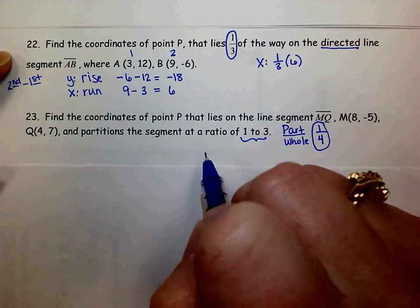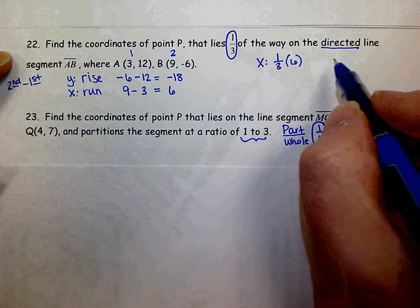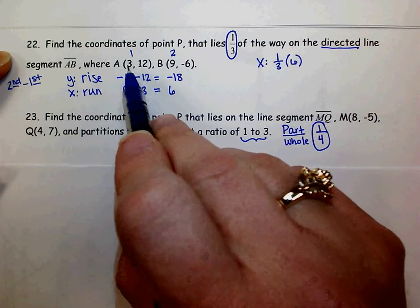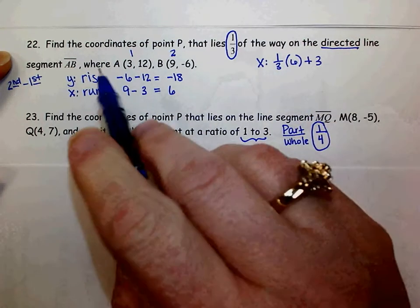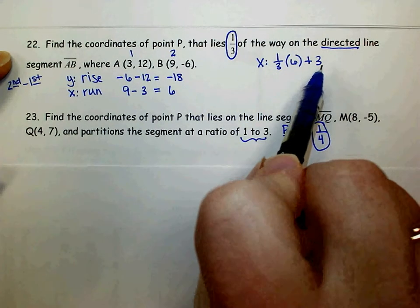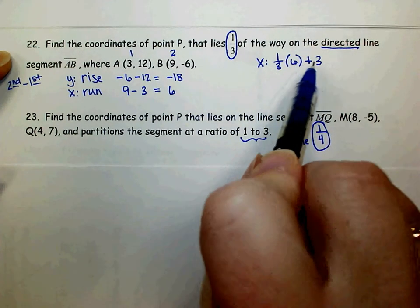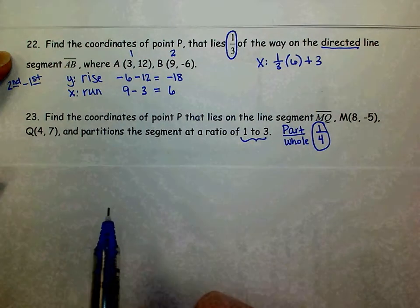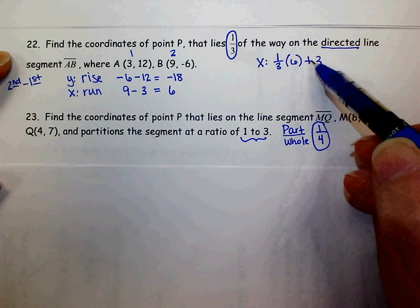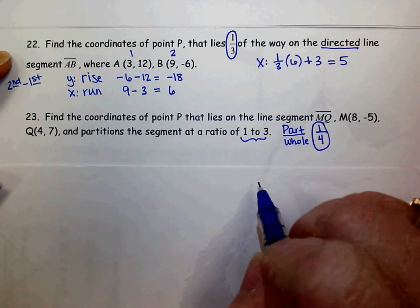That tells me how far to go from my first point, which is point A. So I'm going to add that to the x-coordinate of my original point. So remember to make sure everything has to do with x here. This is my run, and this is the x of my first point. So a third of 6 is 2. 2 plus 3 is 5. So my x-coordinate is 5.